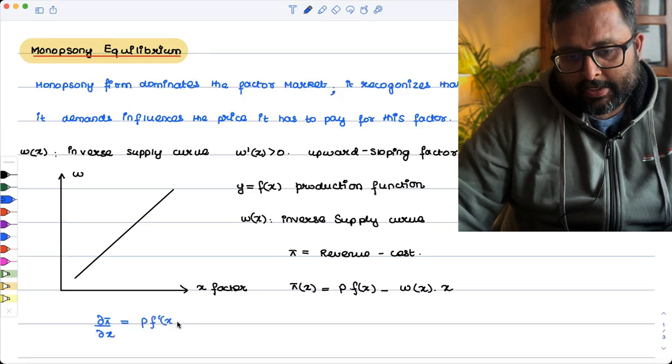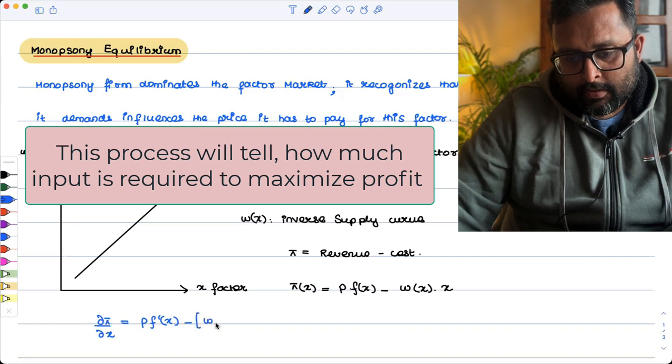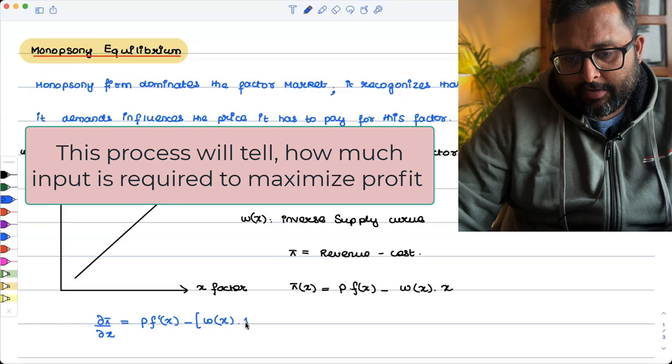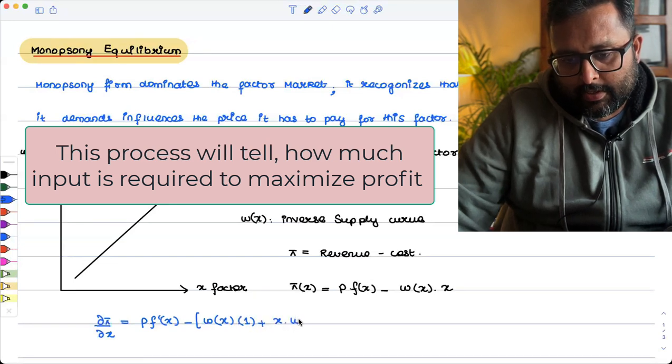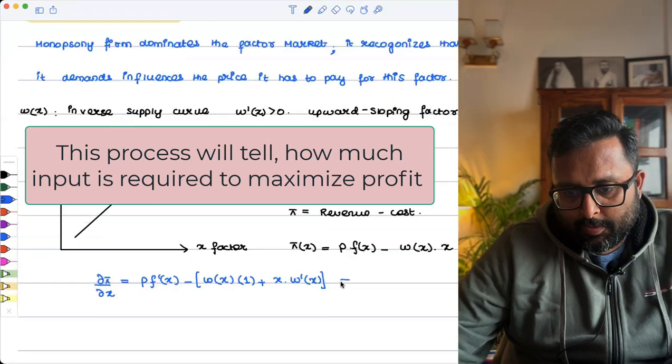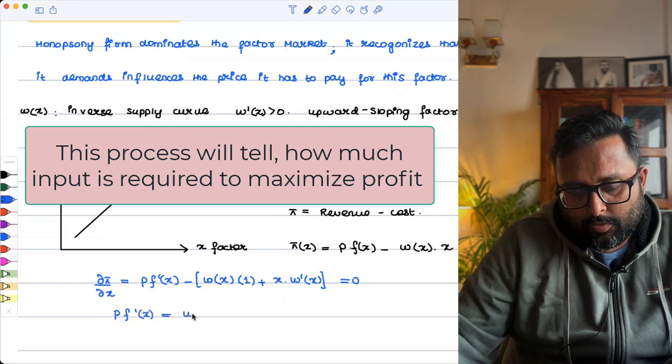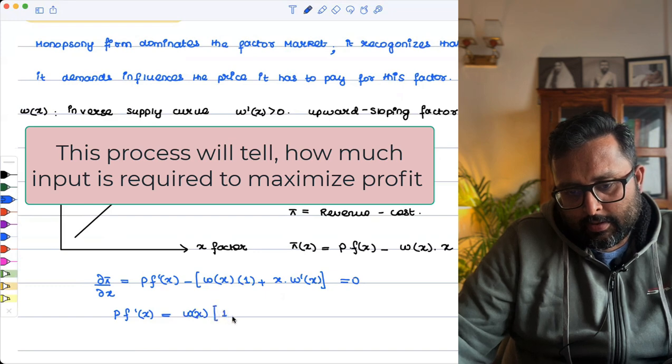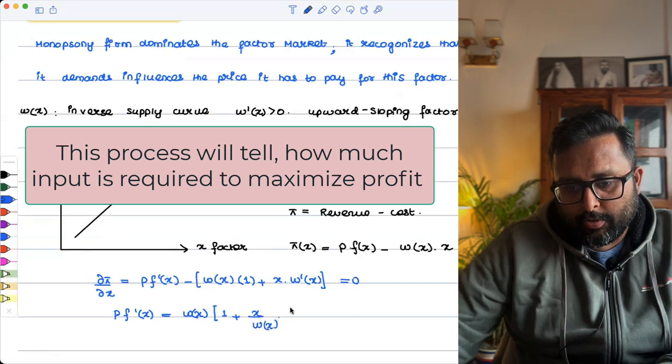P F dash X minus first function as it is into derivative of second function plus second function as it is into derivative of first function. That should be equal to zero. So it is P F dash X is equal to WX. I can take up WX common into W dash X.